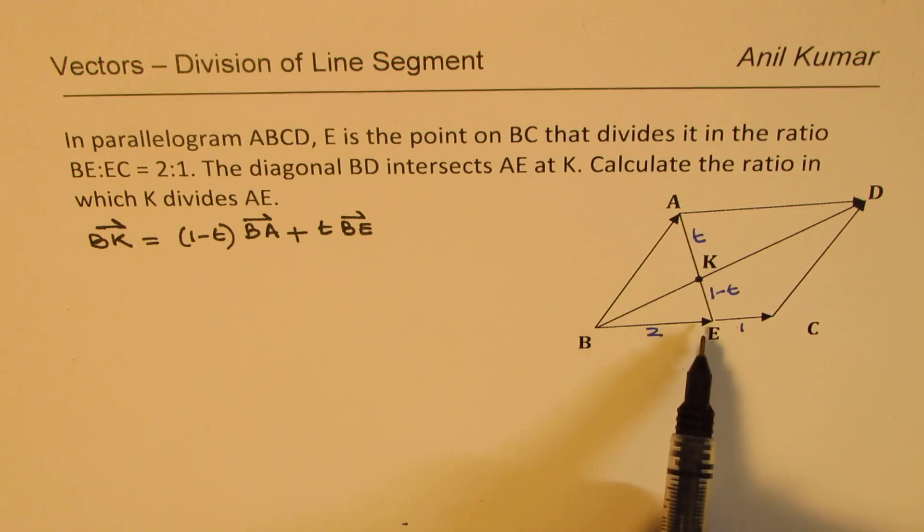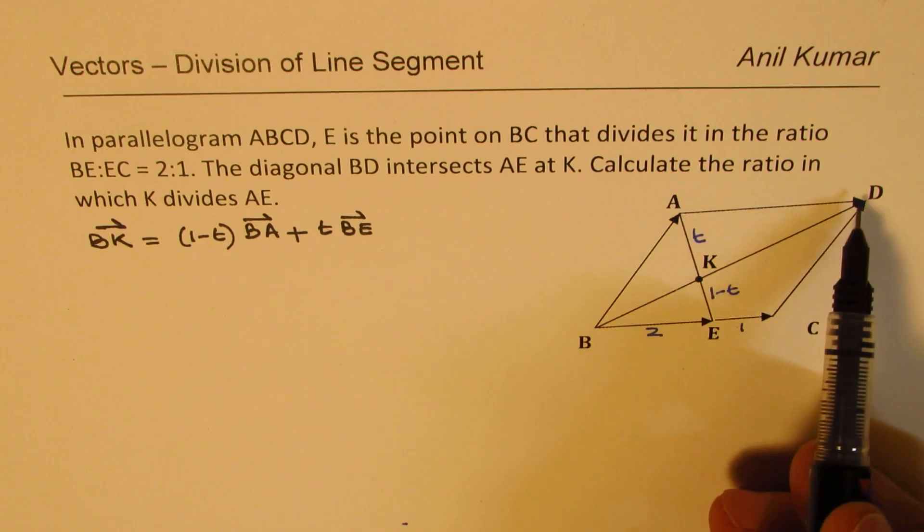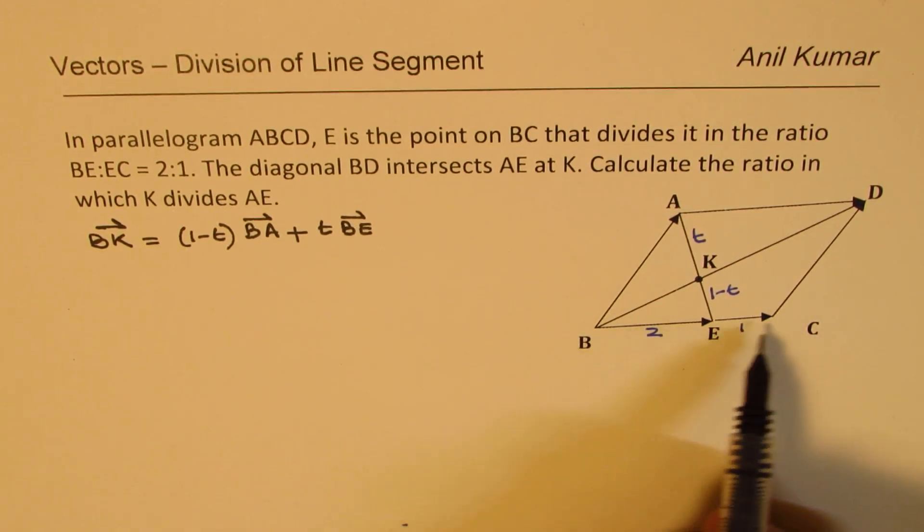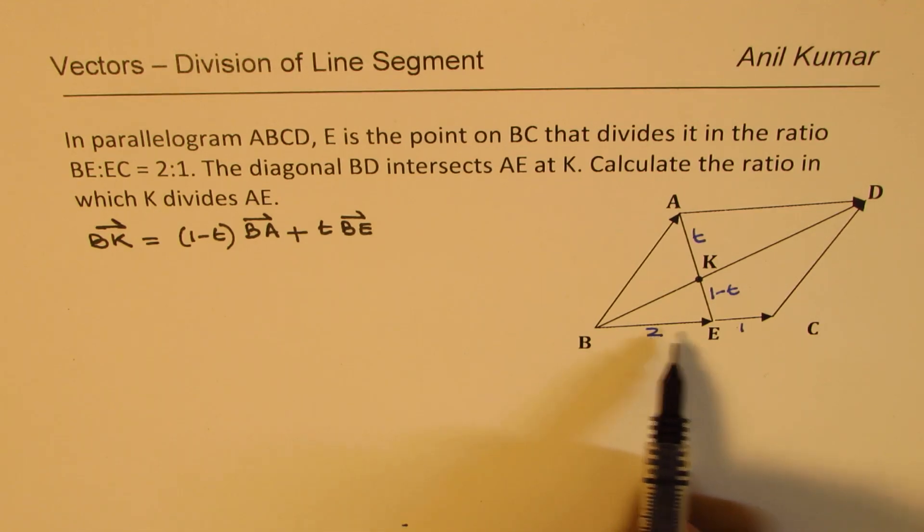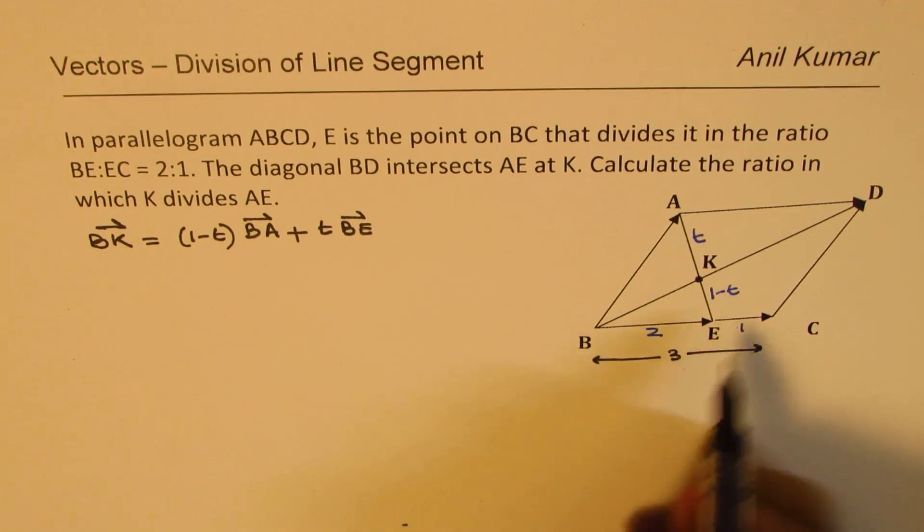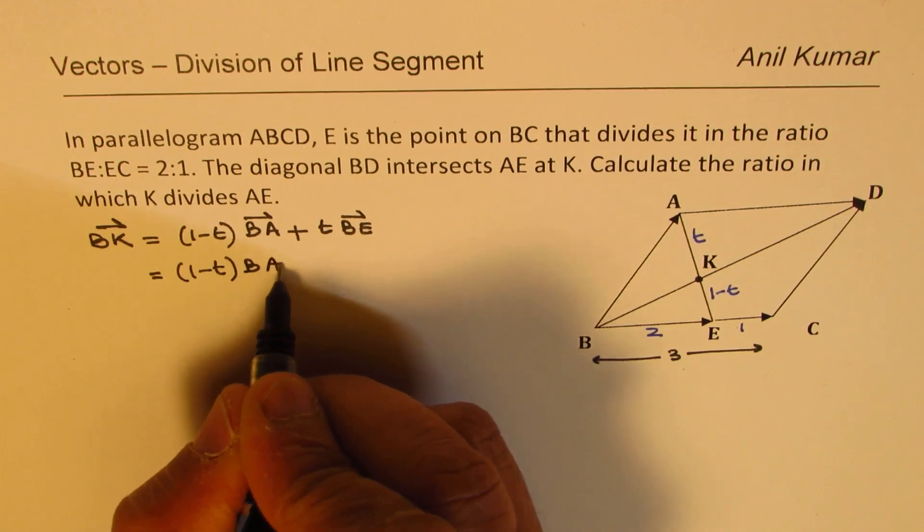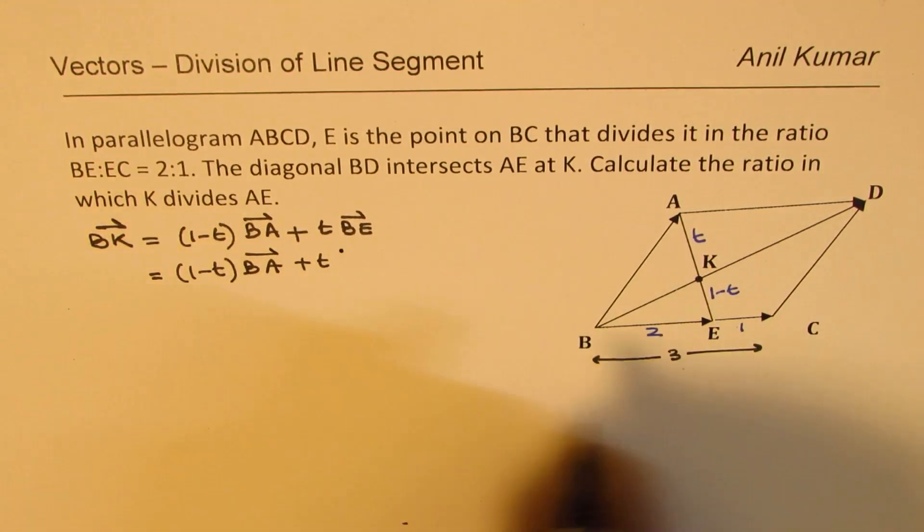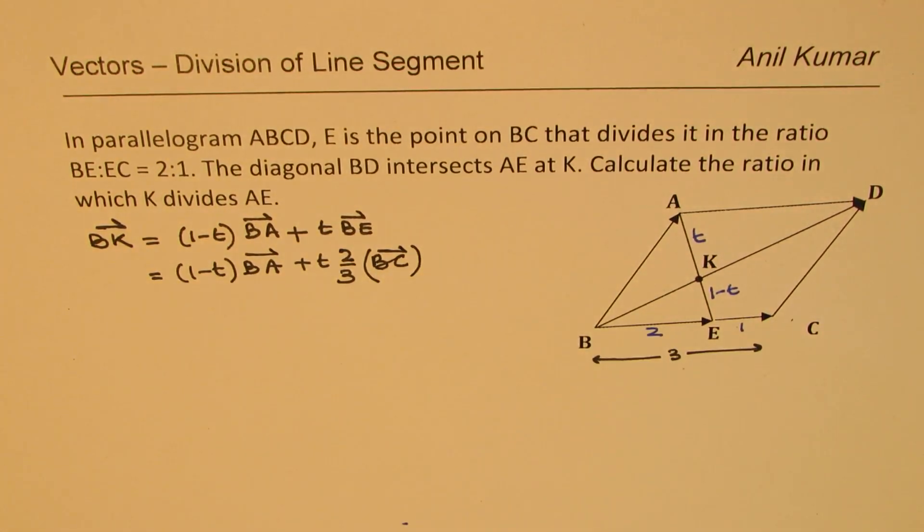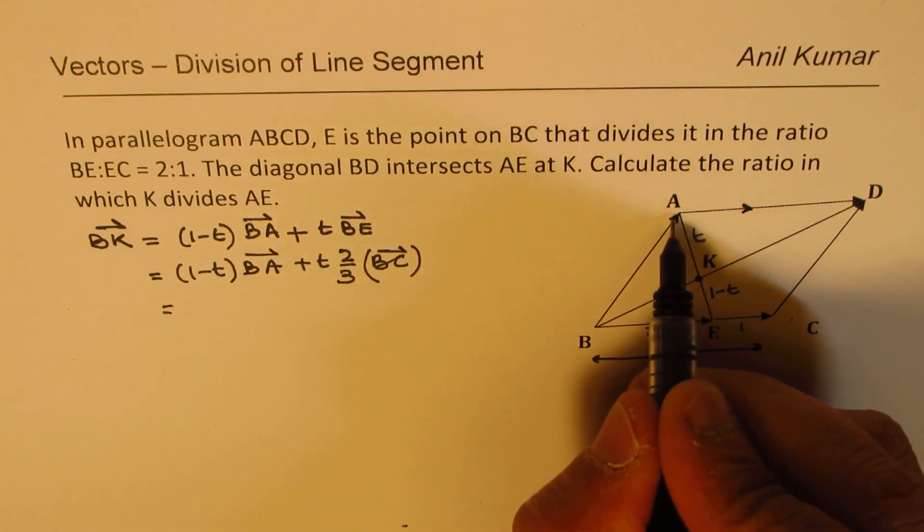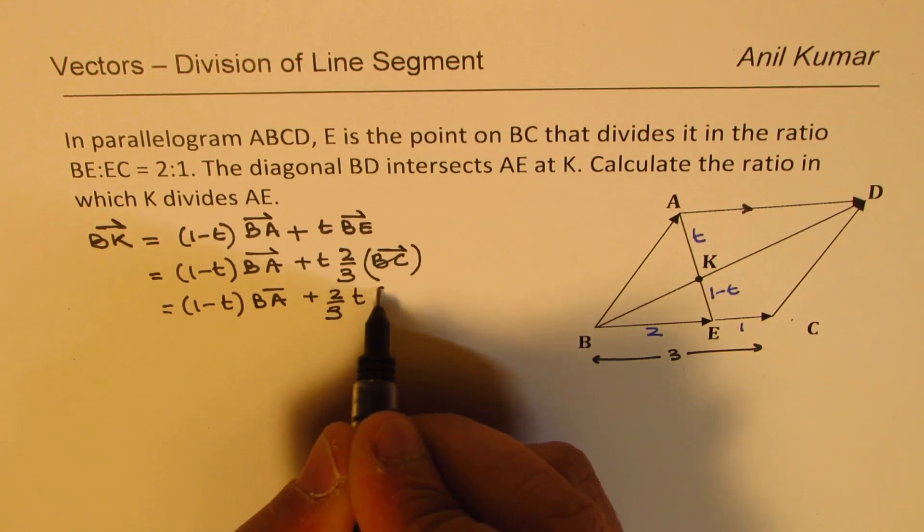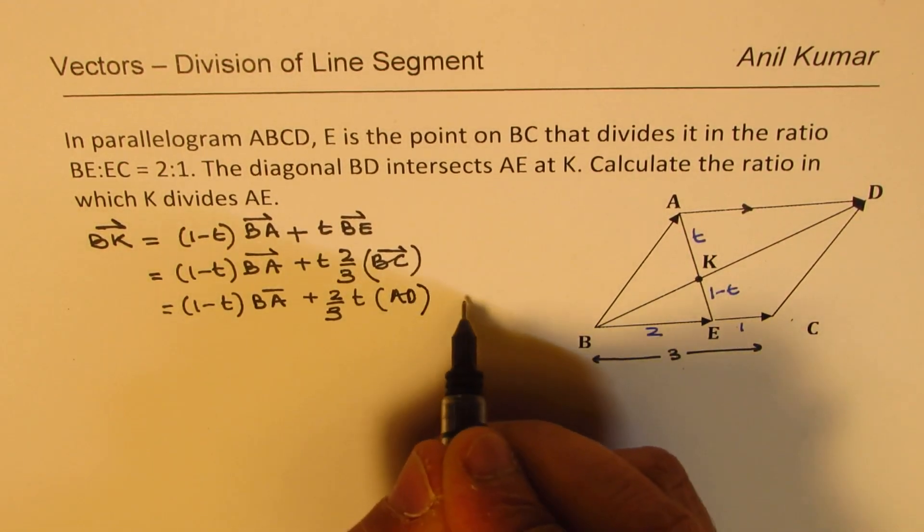Now we have BE here. We could write this BE in terms of AD since I want to write BK also as part of this diagonal. Now BE is, if it is 2 and 1, total is 3. So you can say that BE is 2/3 of BC. So I can write this as 1 minus T times BA plus T times 2/3 of BC. Now BC, this is a parallelogram, is equal to AD. So we get 1 minus T times BA plus 2/3 of T times AD. We call this as our equation number 1.